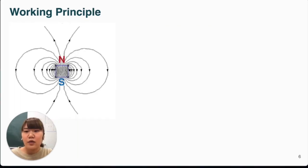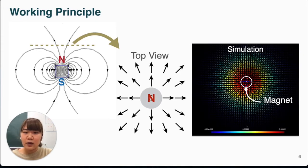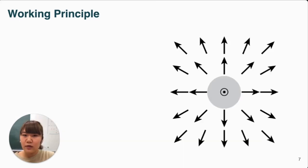First of all, a permanent magnet generates a constant magnetic field around it. We cut out one side of the magnetic field slightly away from the center, simulate and record the data of the magnetic field on that side. On this surface, we measure the magnetic vector using a three-axis magnetic sensor.